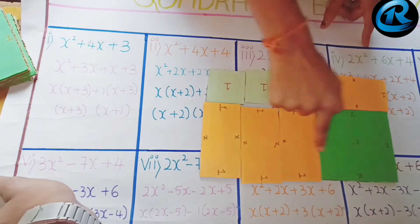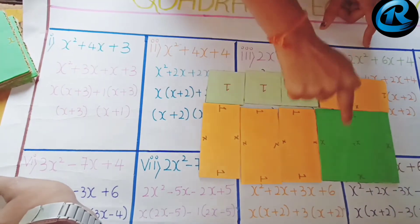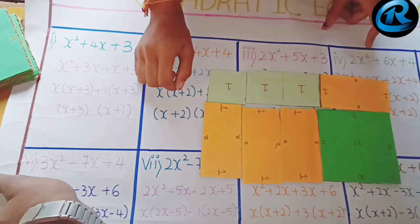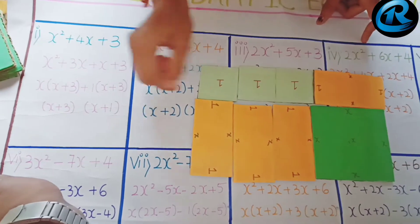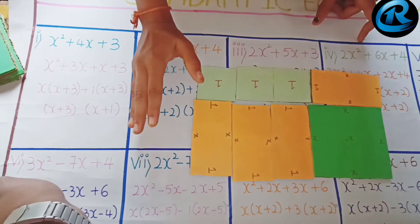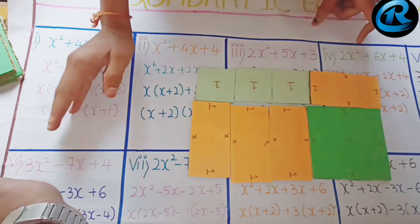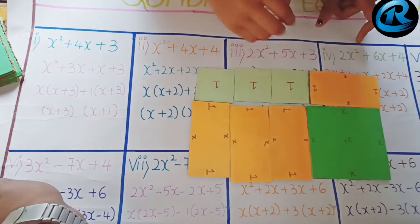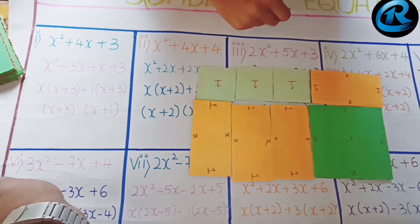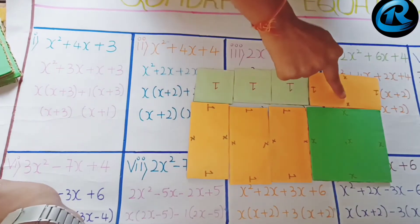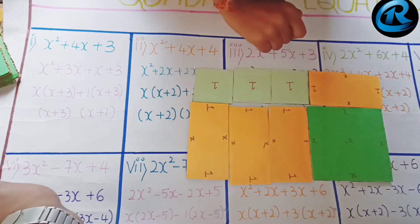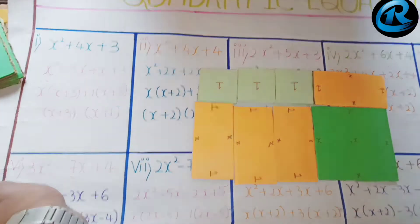That is, (x + 3) and (x + 1) are the zeros of this equation. By this, we can find the zeros. That is, p(x) = 0 gives x + 3 = 0, so the zero of the polynomial is −3. And x + 1 = 0 gives the zero of the polynomial as −1.